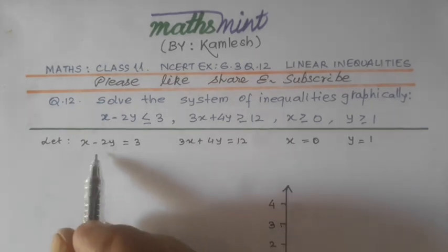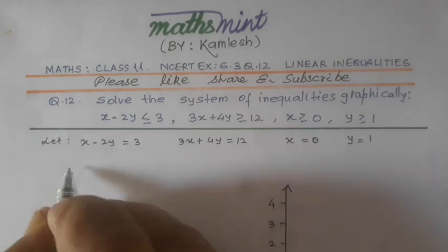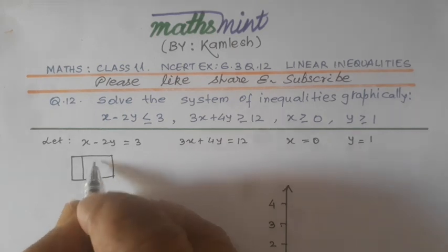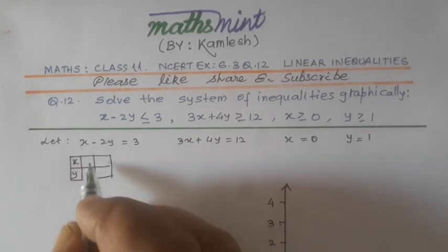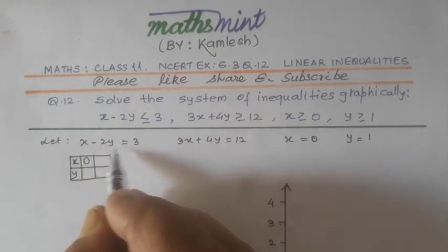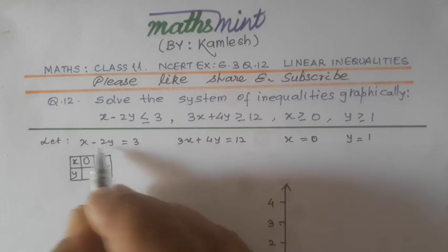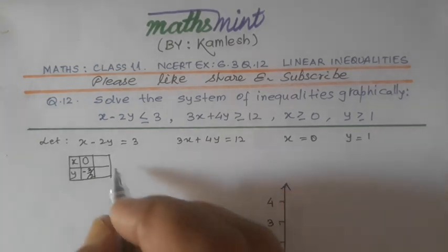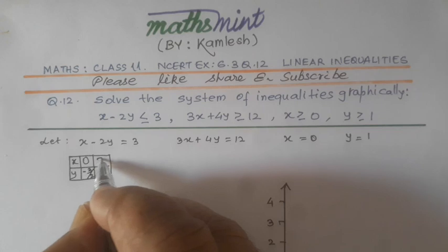To draw these equations on graph, first we find two points. For that, we are drawing a box with x and y. If x is equal to 0, then minus 2y equals 3, and y will be minus 3 by 2. And if y is equal to 0, this part will be 0, x will be 3.